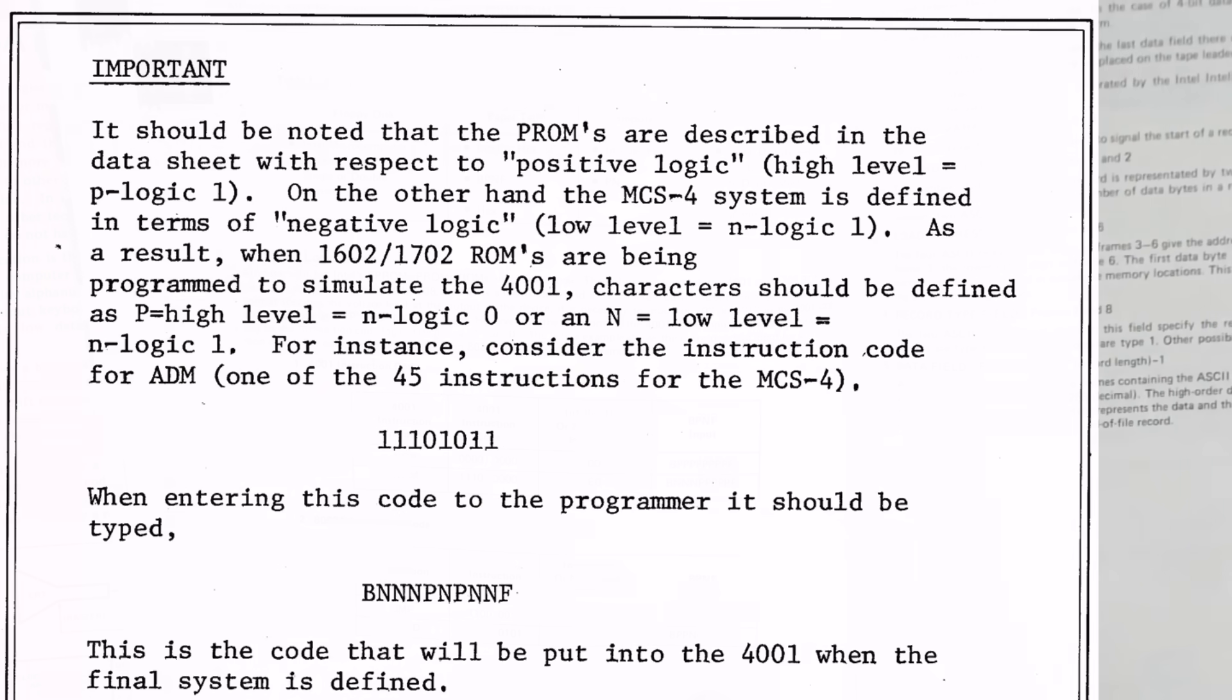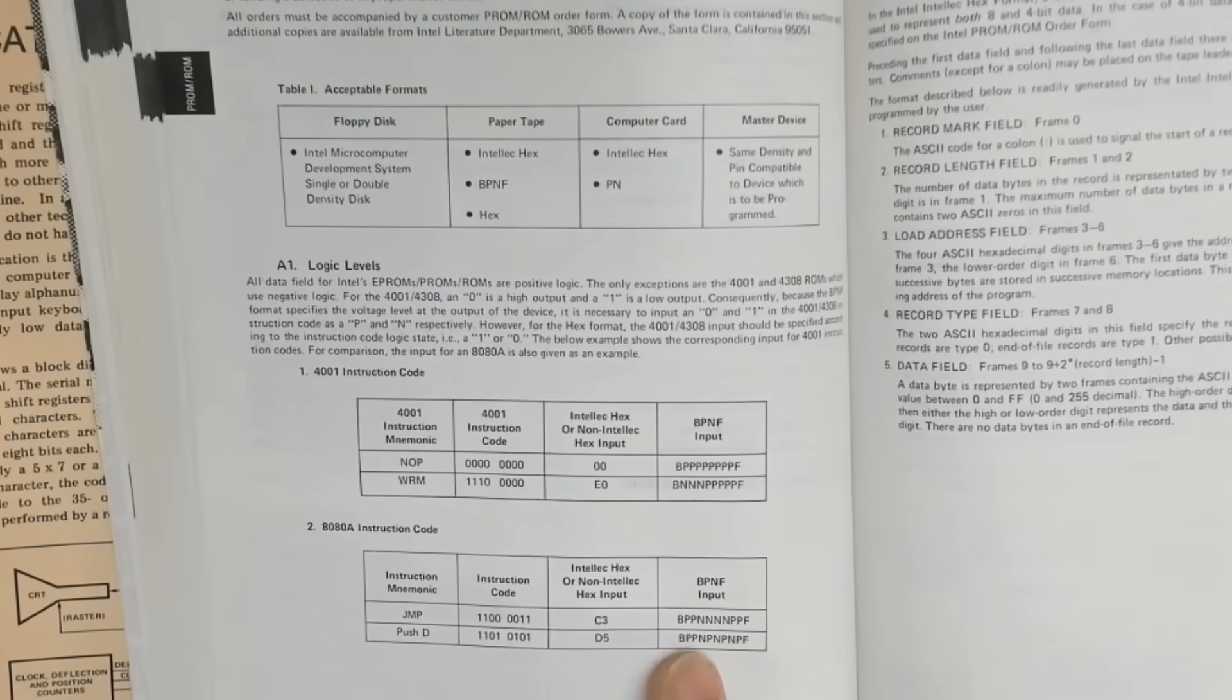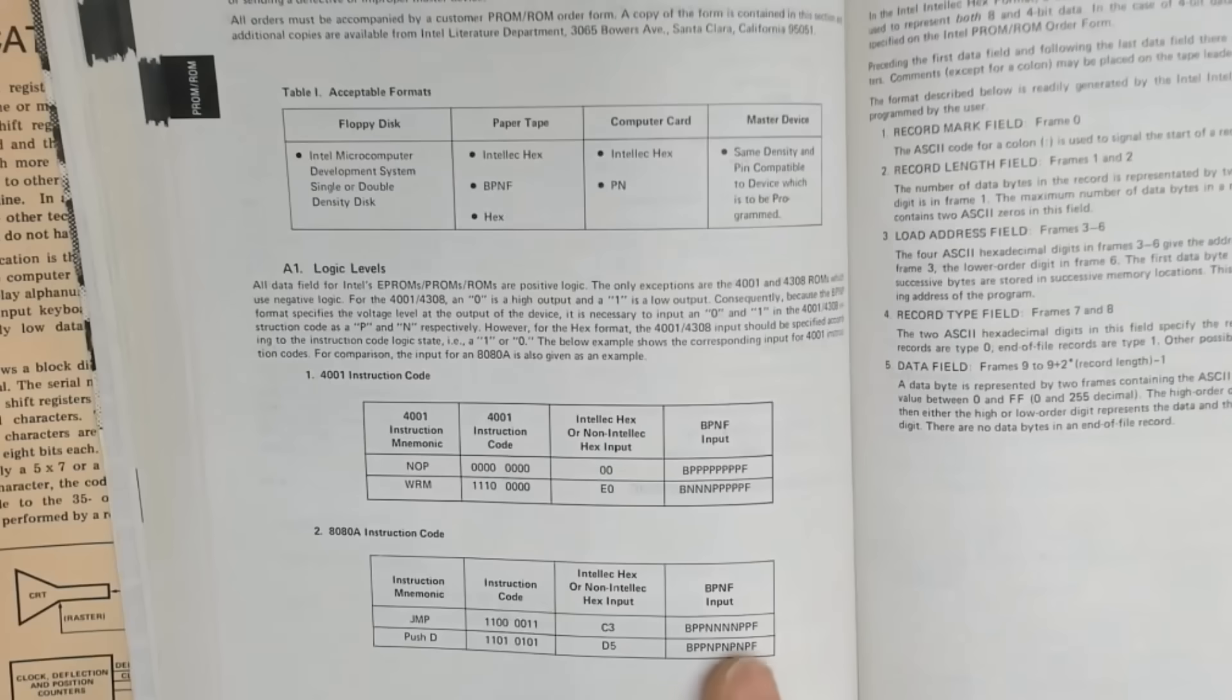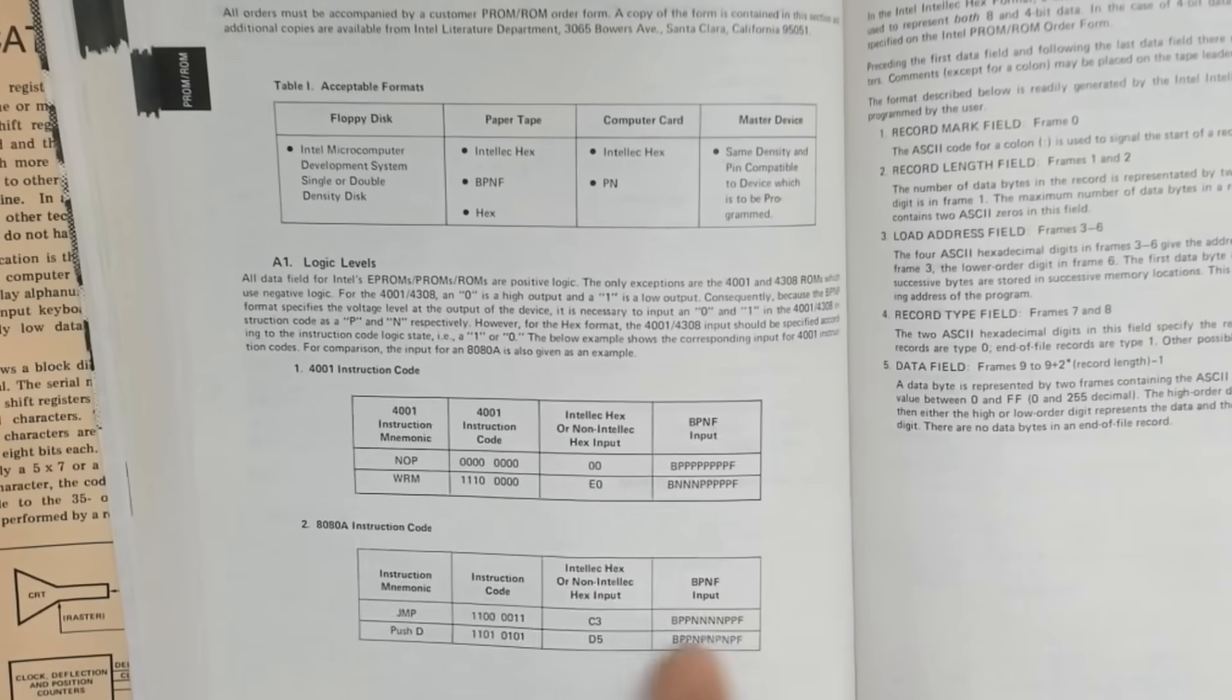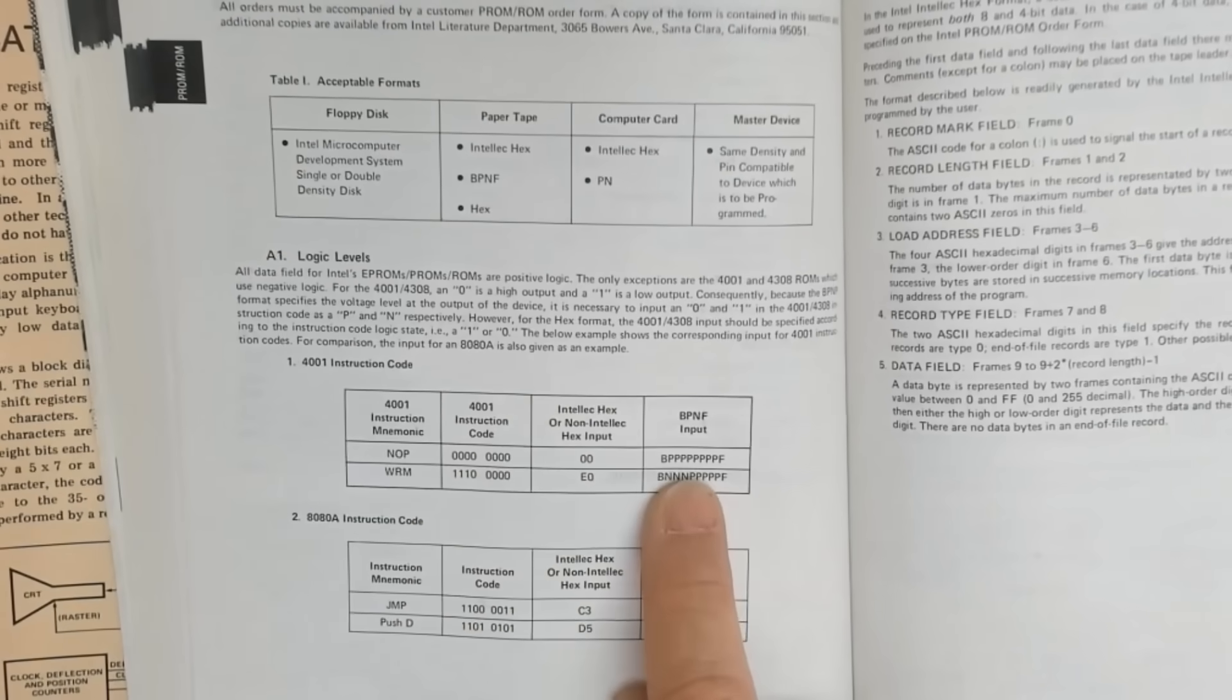But things like this table made everything much more clear when they gave examples of an instruction and then how it should be submitted as either P's or N's. So you can see for the 4004, all zeros should be submitted as all P's.